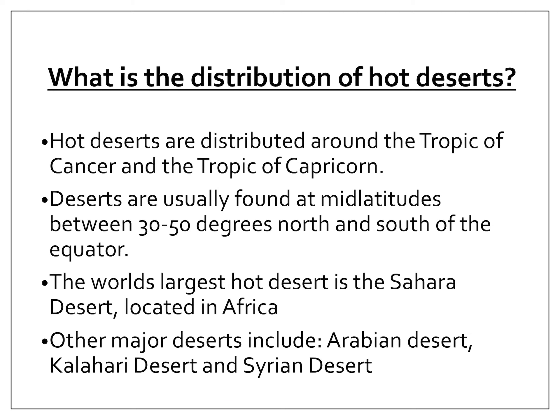So what is the distribution of hot deserts? The word distribution means how spread out something is — where can the deserts be found? Hot deserts are distributed around the Tropic of Cancer and the Tropic of Capricorn. Deserts are usually found at mid-latitudes, between 30 to 50 degrees north and south of the equator.